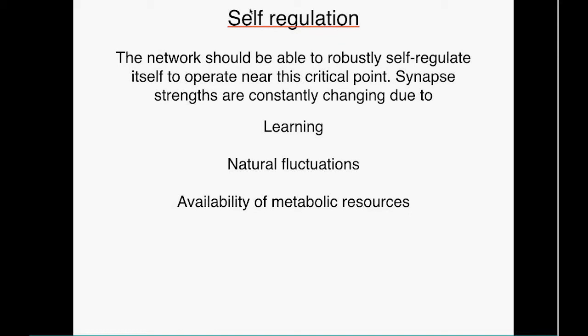The key question is how the brain self-regulates to operate near this critical point. Synapse strengths are constantly changing due to learning — some increase, others decrease — changing matrix entries and therefore the eigenvalue. There are also natural fluctuations in the biological system, and synapse strengths can effectively change due to availability of metabolic resources.